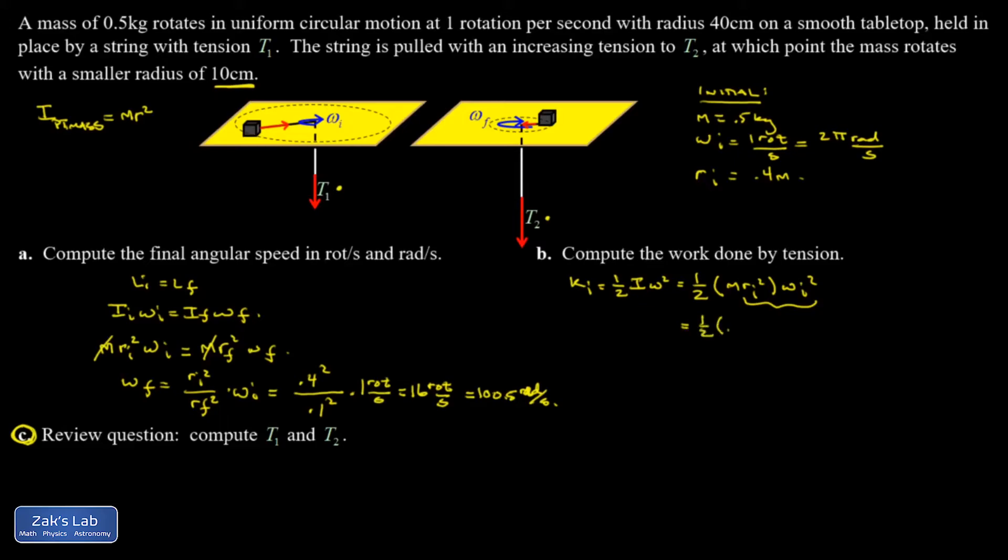So I end up with 1/2 times the mass, which is 0.5 kilograms, times the initial radius squared, initial angular velocity squared. And you have to be in radians per second for this. So putting that in radians per second. And I get 1.58 joules out of this.